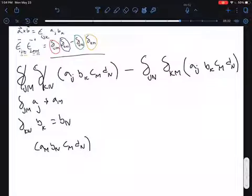So now the right hand side becomes, we're going to switch the variables A sub J and B sub K. So A sub J becomes A sub N, B sub K becomes B sub M, and then C of M and D sub N stay the same.